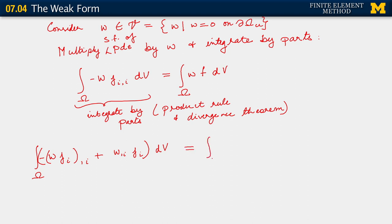This is equal to integral over omega of w f dV. When we stare at our left-hand side integral, we realize that we can view w j_i as essentially a vector — because j is a vector — and that term is essentially the divergence of w j. There we invoke the divergence theorem. This step is really just the product rule.